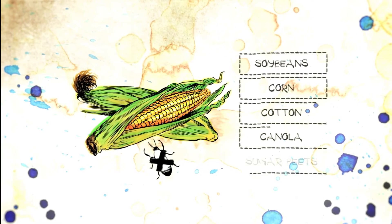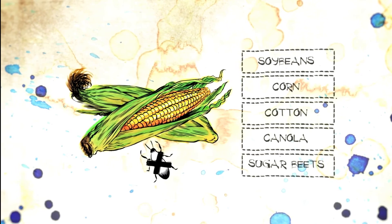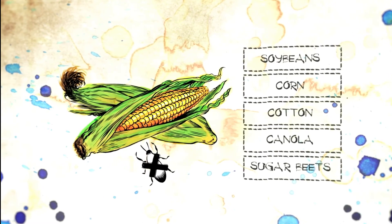Crops commonly modified using this technology include soybeans, corn, cotton, canola, and sugar beets.